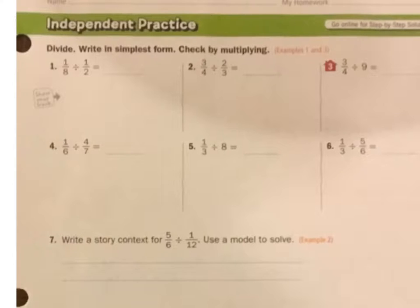Now we're going to go with the keep, change, change. This first one I'm going to keep the 1/8, change the sign and change the reciprocal there. Now I can cross simplify that, or reduce I should say. 2 divided by 2 is 1, 8 divided by 2 is 4. Now I go 1 times 1 is 1, 4 times 1 is 4. My answer is 1/4.